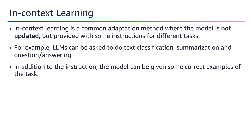In-context learning refers to the ability of large language models to understand and follow instructions or prompts provided within the input context itself. It is a common adaptation method where the model is not updated, but provided with some instructions for different tasks — such as text classification, summarization, and question-answering — simply by providing the relevant instructions. The model can also be given correct examples to further guide its understanding. This approach allows for flexible and efficient adaptation without the need for retraining or fine-tuning on new data.